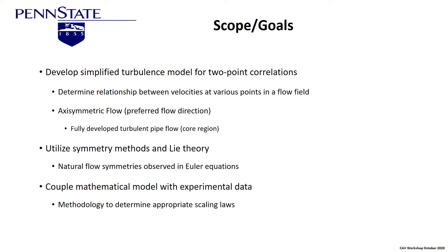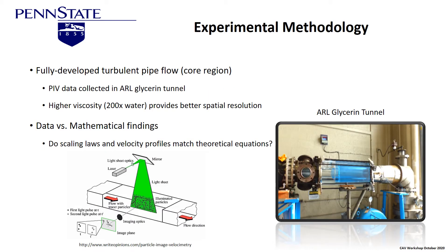We're exploiting symmetry analysis developed in mathematics over the years to examine cylindrical coordinate systems such as pipe flow, and we're using experimental data to fill in correlation models that are fundamental in characterizing turbulence. For the experimental methodology, we're using a fully developed pipe flow where the fluid is glycerin. ARL has had this tunnel for several years — it's very well characterized and well-behaved. We're using particle image velocimetry in the glycerin tunnel; the higher viscosity amplifies turbulence scales so we get very detailed data. We're applying scaling laws with velocity profiles to match the theoretical equations.